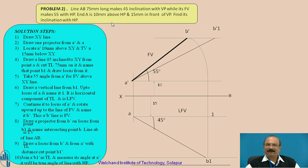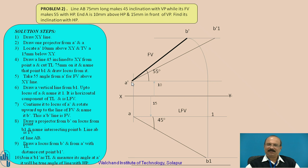The true length is 75 millimeters as given in the problem. Keep the compass here, take 75 millimeters length, and cut the locus of point B. Wherever it cuts gives B1-dash. The line from A-dash to B1-dash is the true length. Measure the angle theta at this position using a protractor. That angle is the inclination with HP — which is what the problem expects you to find.